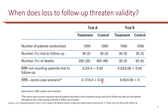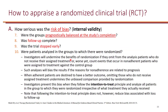In Trial A, adding those numbers gives a relative risk reduction of 43%, which is similar to 50%. In Trial B, where the number of deaths was very small, adding the lost-to-follow-up patients actually doubles the number of deaths, which has a huge impact on the results of the sensitivity analysis. That's why it's important to consider the number of patients lost to follow-up when evaluating clinical trials.